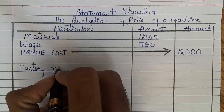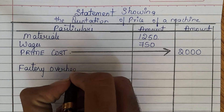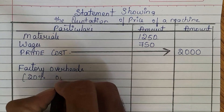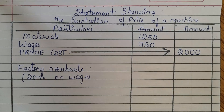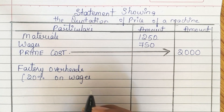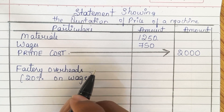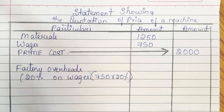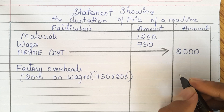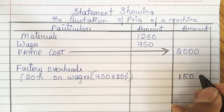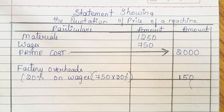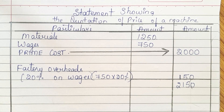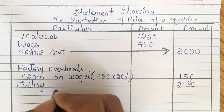We found that factory overheads should be charged at 20% on wages. Our wages are 750, so 750 into 20% is Rs. 150. Add 2,000 and 150 to get 2,150. This 2,150 is known as factory cost or work cost.